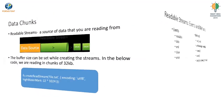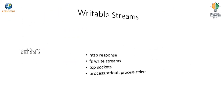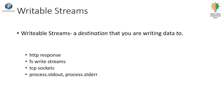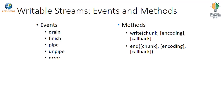Writable streams can include HTTP responses and TCP sockets — you can read data from a file and write it to a socket. It is just a destination through which you want to send the data. These are the events and methods supported in writable streams, and streams mainly work with events and event handling.